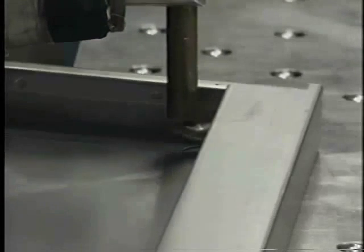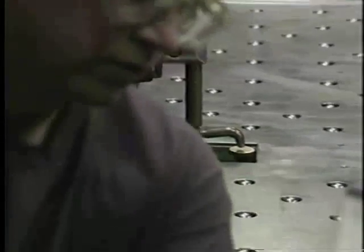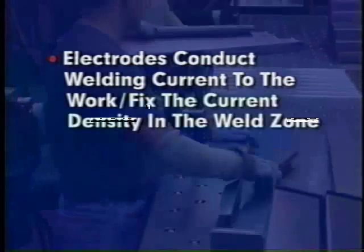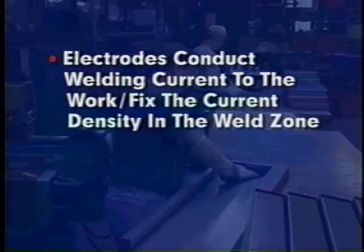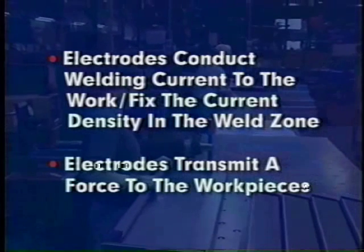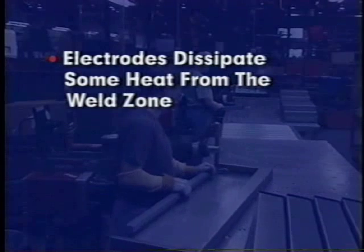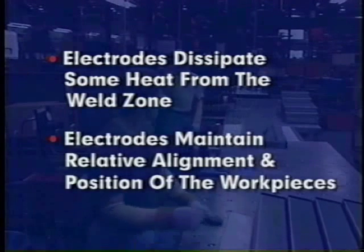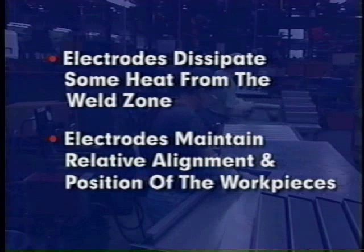Resistance welding processes use copper electrodes. These electrodes perform four functions. They conduct the welding current to the work and in some cases fix the current density in the weld zone. They transmit a force to the workpieces. They dissipate some heat from the weld zone. And they maintain relative alignment and position of the workpieces in some resistance welding operations.